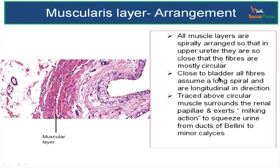Close to the bladder, all the fibers assume a long spiral — they are lengthy spiral and longitudinal in direction. So in the upper ureter it is mostly circular, and in the lower ureter, because of the long spiral fibers, it is longitudinal in direction.